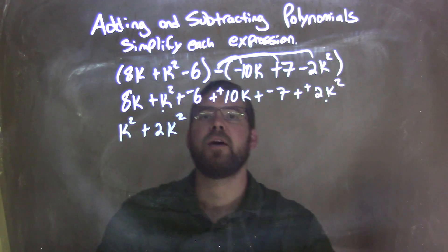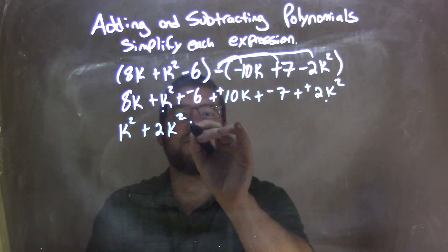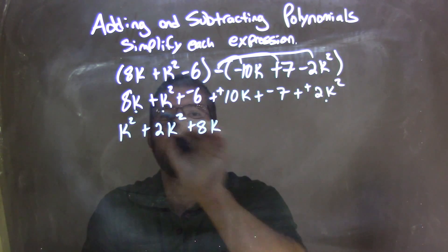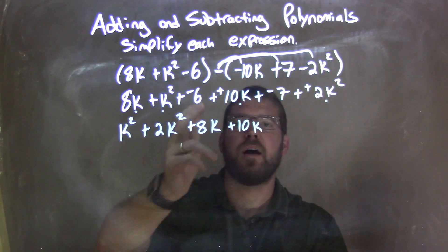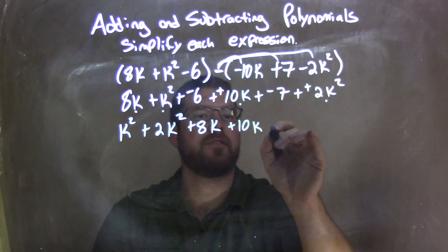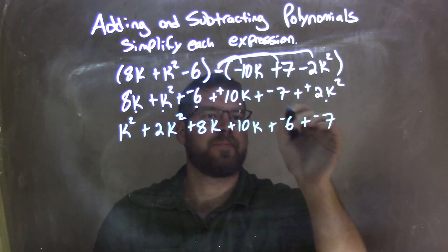From there, I don't have anything else to the second power, so the first power is 8k, and then plus 10k. I have nothing else with k's, but my constants: plus a negative 6 and plus a negative 7. Right there. So now I've brought my like terms together.